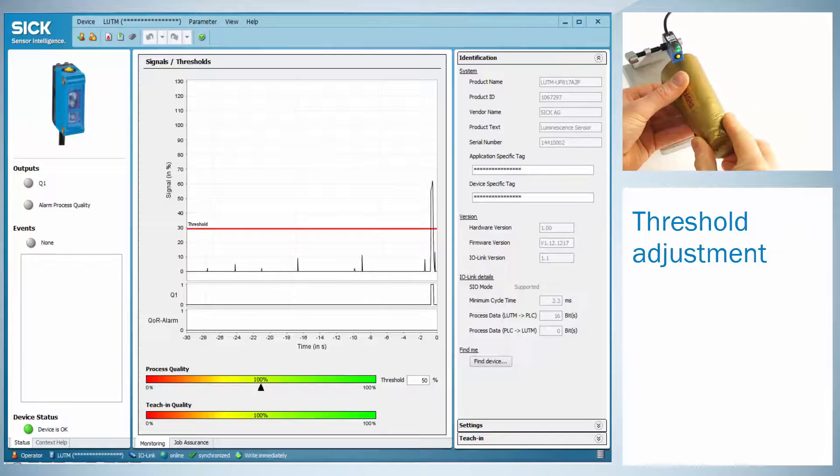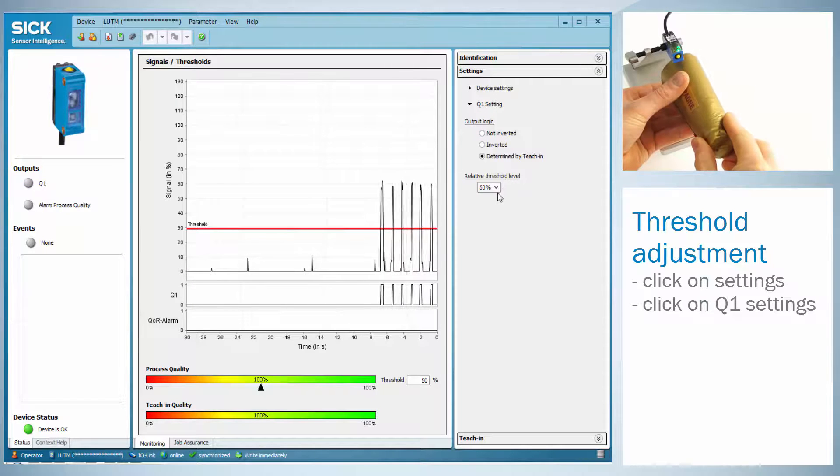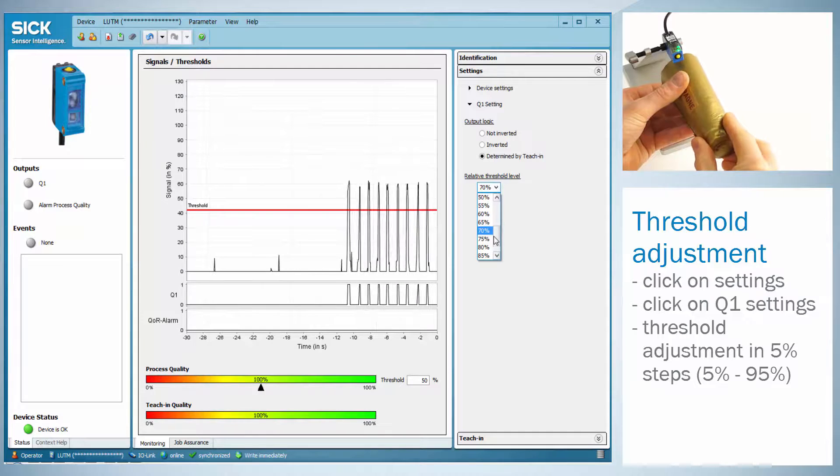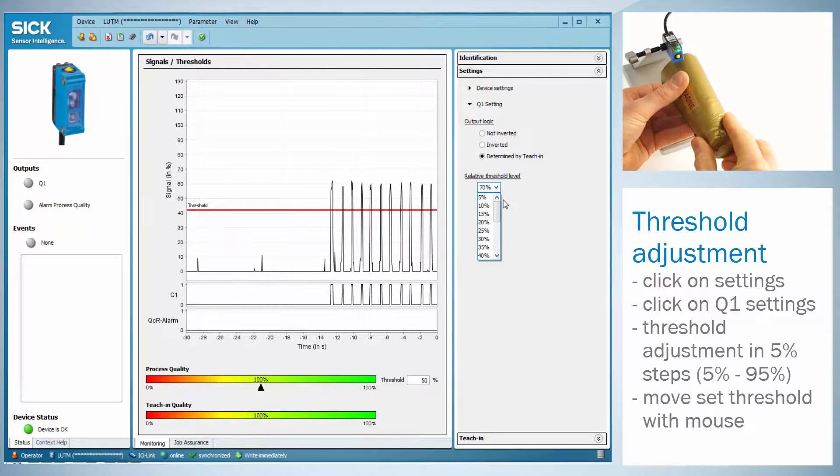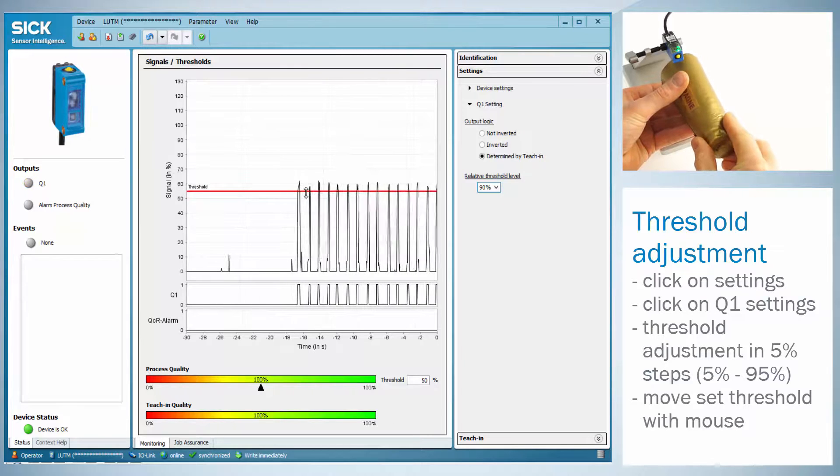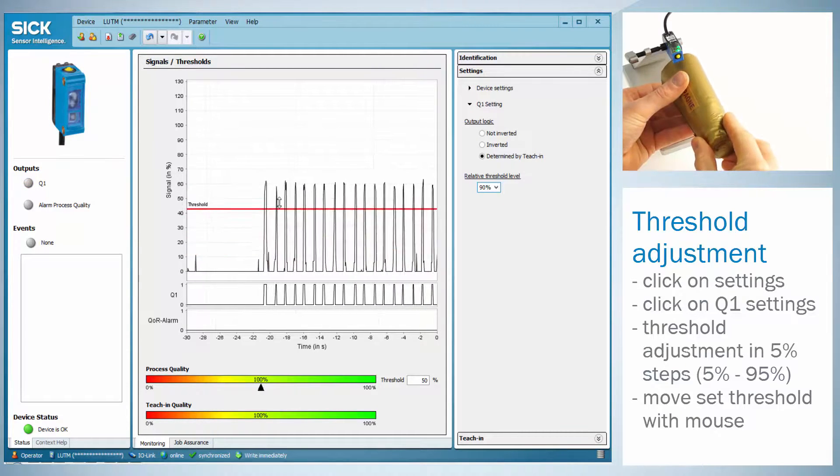The threshold of the switching output can be adjusted by clicking on the settings flag and then on Q1 settings. The threshold can be adjusted in 5% steps between 5 and 95%. Another possibility is moving the threshold level with the mouse on the central screen. These threshold adjustments can be useful if the luminescence mark varies in intensity.